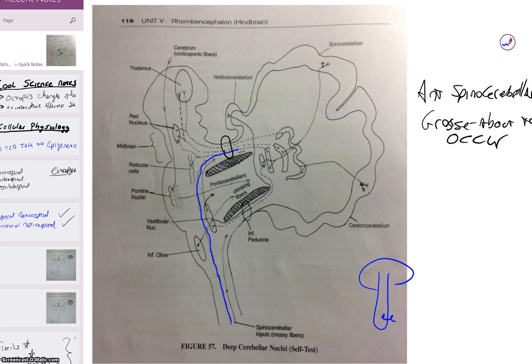The anterior comes in this side, little synapse, crosses over, comes up, and makes a number four right there. This is where that peduncle is right there.